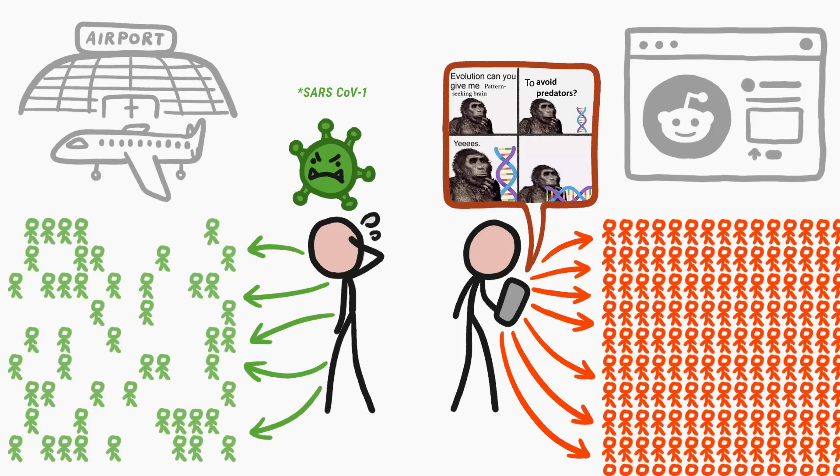Another reason is that, in the case of diseases, we are constantly taking measures to prevent their spread, which actively lowers their reproduction numbers, while we don't take any such precautions with memes.